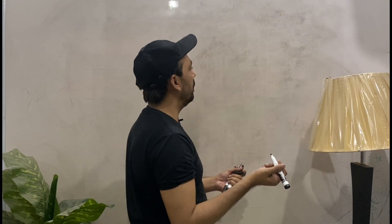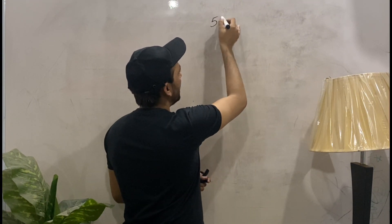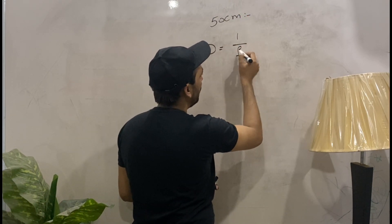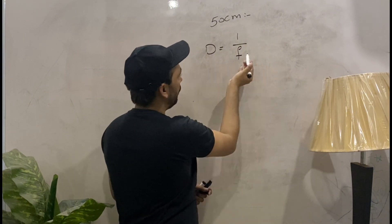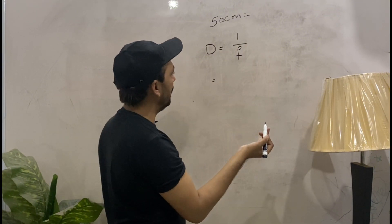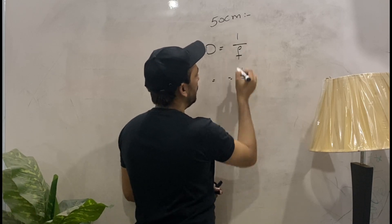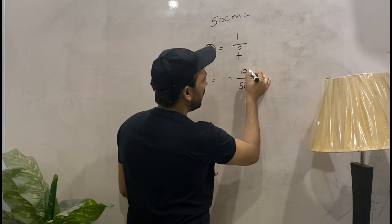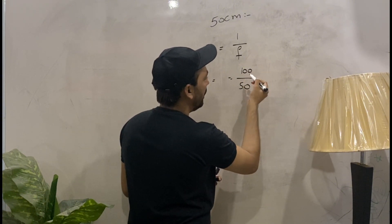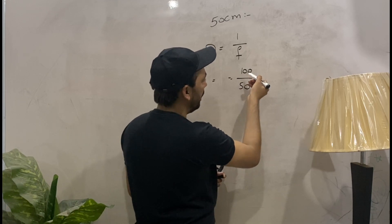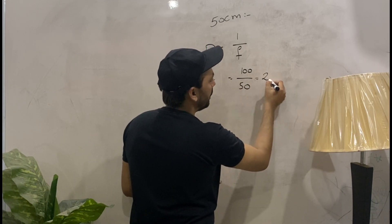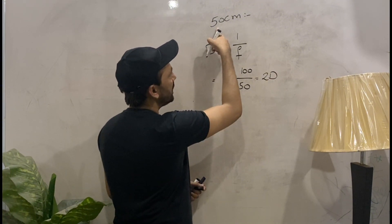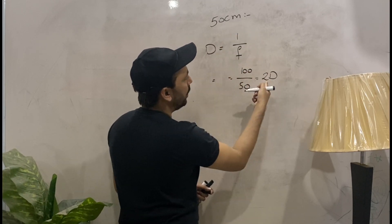The working distance is 50 centimeters. Using the formula D = 1/f, we convert 50 centimeters into diopters: 100 over 50 equals 2 diopters. So the working distance of 50 centimeters converts to 2 diopters.